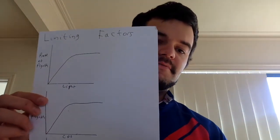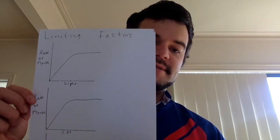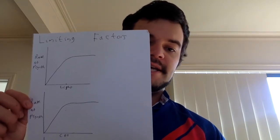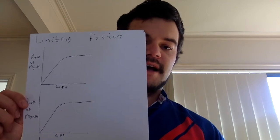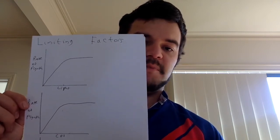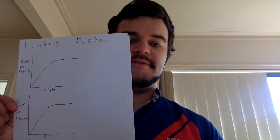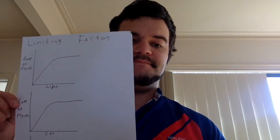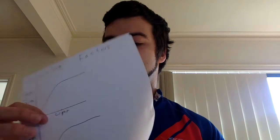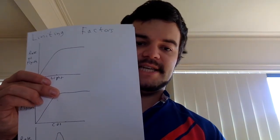Carbon dioxide as a limiting factor works basically the same as light. Increasing carbon dioxide will increase the rate of photosynthesis up to a point, after which it will level off. And again, at the point where it levels off, something else is limiting the rate of photosynthesis.